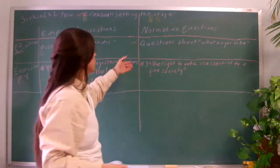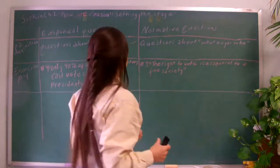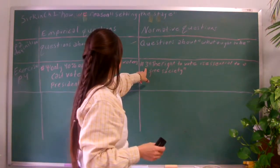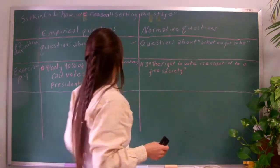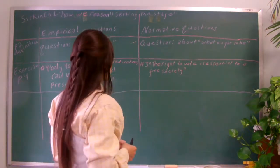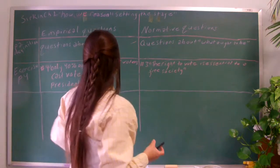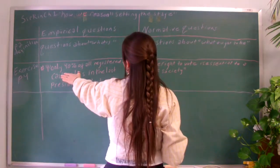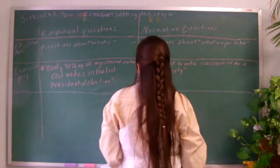Let's look at a normative question. Questions about what ought to be, or what we think ought to be. And the example he gave, which was number 4, the normative question is, the right to vote is essential to a free society. This is something we think ought to be, whereas choice number 1 is the empirical question: only 40% of all registered voters cast votes in the last presidential election.